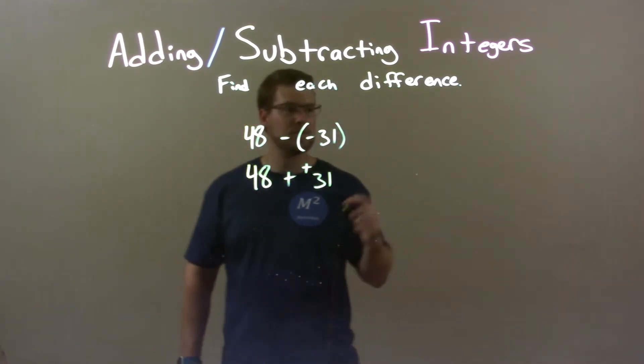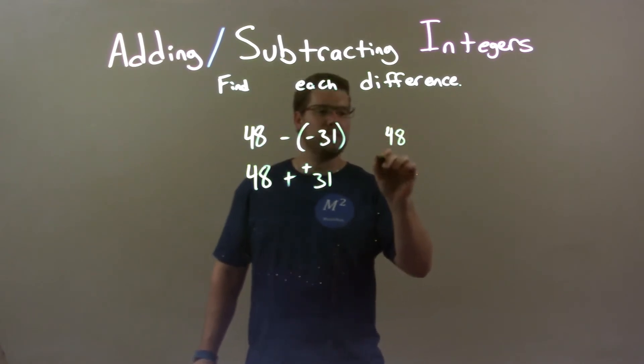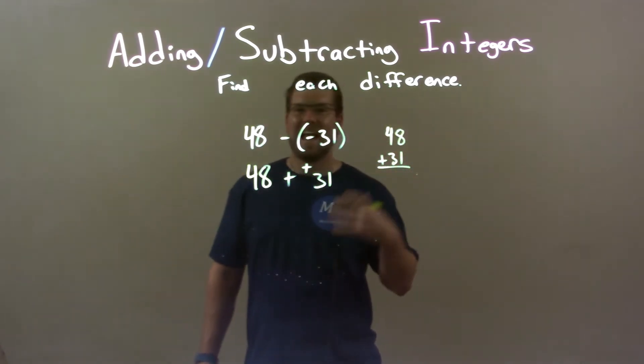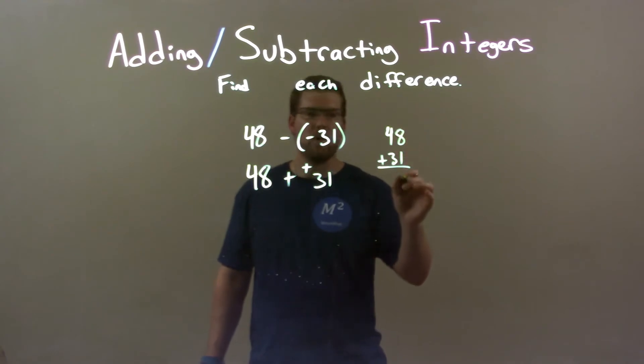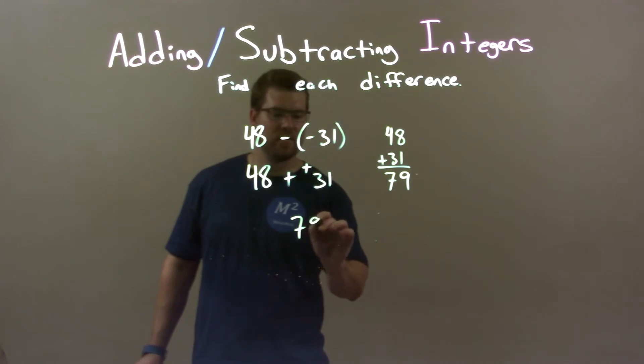I like to do this the traditional way. I have 48 plus 31 and add those together. Well, 8 plus 1 is 9, 4 plus 3 is 7. And so, our final answer here is 79.